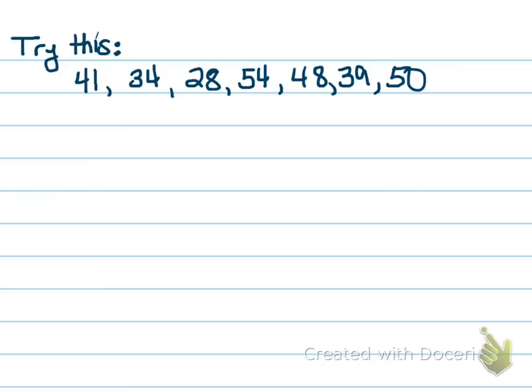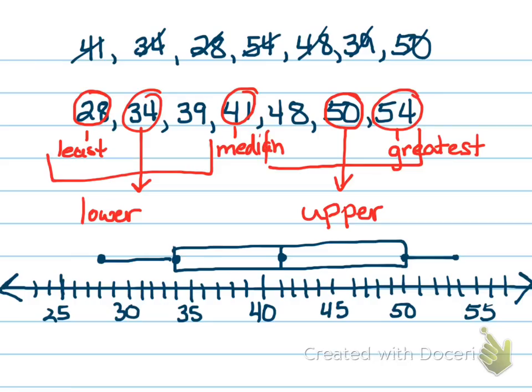Let's go ahead and check our answer. Your box and whisker plot should look very similar to this. Notice we identified the middle number, the median is 41. We've got the least, the greatest, and the lower and the upper quartile. And then, of course, we have the interquartile range.